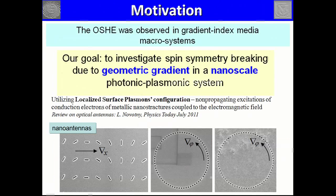The optical spin Hall effect was observed in gradient index media in the micro-scale. We would like to manipulate a nanoscale photonic system using spin as a degree of freedom, and we cannot use gradient index, but we can exploit geometric gradients in the nanoscale. In order to form a geometric gradient, we utilize the localized surface plasmon configuration. Localized surface plasmons are non-propagating excitations of conduction electrons of metallic nanostructures coupled to the electromagnetic field. We fabricated space-variant nano-antennas, resulting in a geometric gradient in the nanoscale.